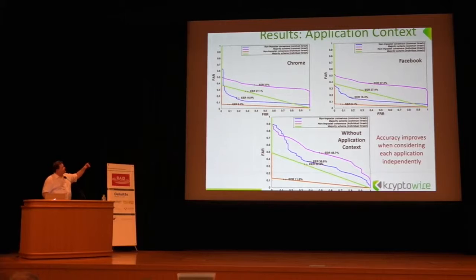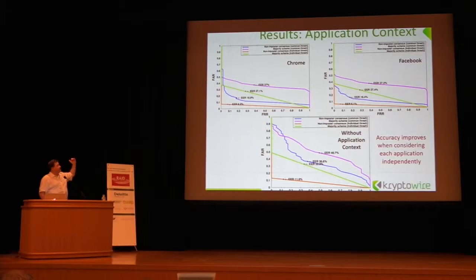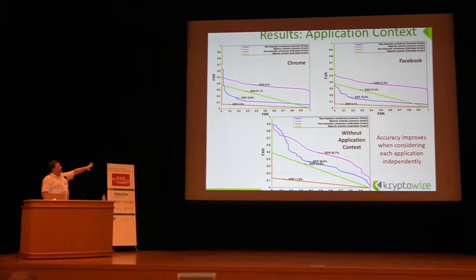All tasks performed by volunteers were sitting down. No content was recorded outside of sensory data, and profiles were generated using 60% of data per user, with the remaining 40% for testing. For Chrome specifically, the non-imposter consensus had a very low EER — a false reject rate of zero and a false accept rate less than 0.3%.